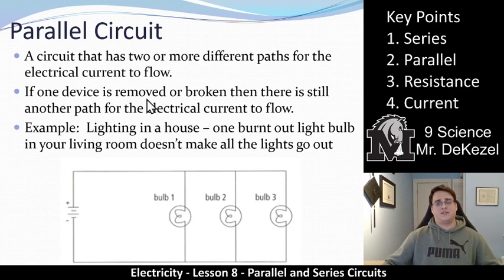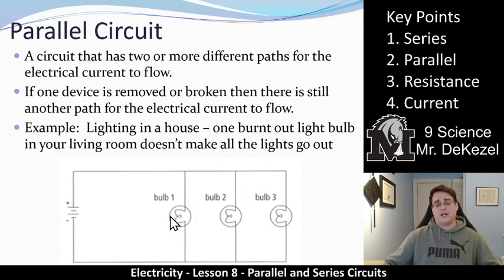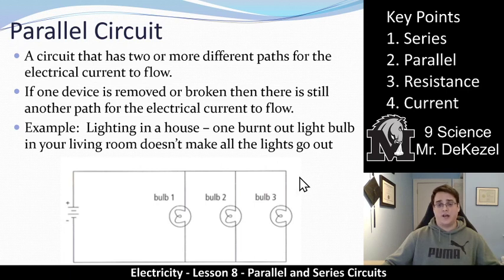If one device is removed or broken, there is still another path for the electrical current to flow. We can see here the electrons would start, flow along this path, and then have an option — they can go through bulb one, bulb two, or bulb three — and then they meet up again. So if bulb one goes out, bulb two and bulb three still work. An example would be the lighting in your house: if one light burns out, it's not like all the lights in the room go out.